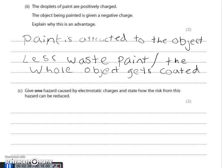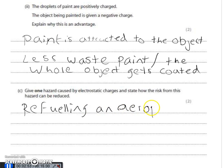One of the big hazards we've talked about where electric charges can cause danger is refueling an aeroplane. As the fuel goes into the aeroplane, there's going to be friction between the fuel and the pipe delivering it, and that's going to cause the fuel and the pipes to become charged — one becomes positive, one becomes negative. If that happens, charges can jump from one to the other and cause a spark, and that spark can ignite the fuel because it's flammable, causing explosions and fire.